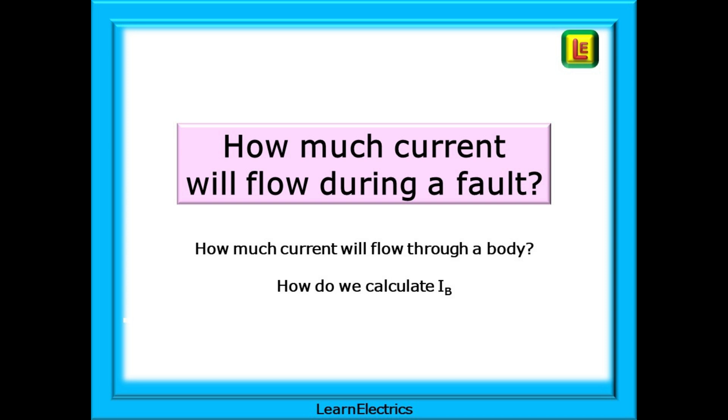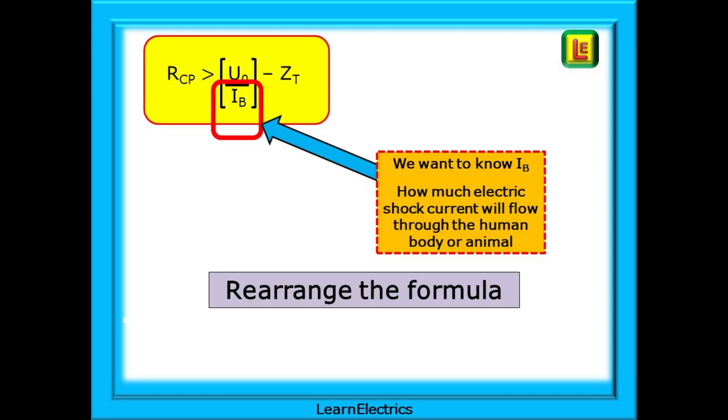Of greater usefulness, in my opinion, is finding out how much current might flow through the body during a fault, and then making a bonding decision based on the current value, or IB. There's no formula for this in the book, so how are we going to calculate it? We want to know IB, how much electric shock current will flow through the human body, or livestock, if we have measured RCP. To do this, we just rearrange the original formula. Let's look.